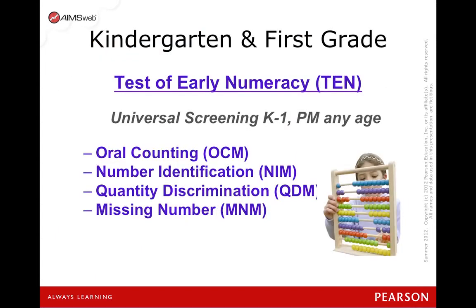Tests of early numeracy: these four general outcome measures are based on research examining the development of children's informal mathematical knowledge. Each task is one minute and designed to represent a critical early numeracy skill for kindergarten and first grade students. These measures may also be used at any grade for progress monitoring purposes.